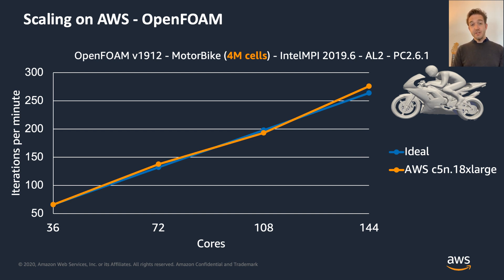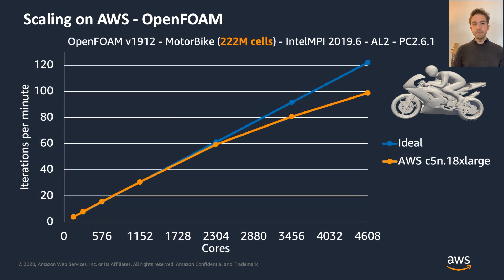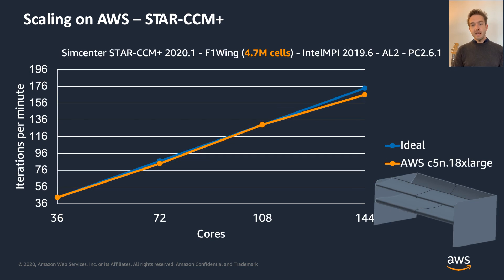Here are some actual benchmarking results. For OpenFOAM (ESI version 1912) with the standard motorbike case at 4 million cells, we achieve linear scaling up to 144 cores — about 20,000 cells per core. At 28 million cells, linear scaling holds to 1,100 cores. For the larger cases, linear scaling extends to about 2,500 cores, and even at 4,000 cores the scaling is still reasonable. We also found that Intel MPI gives better performance than Open MPI for OpenFOAM, and we share those optimised recipes with customers.